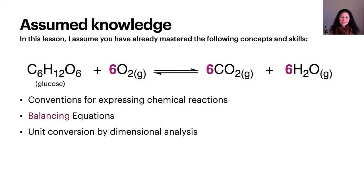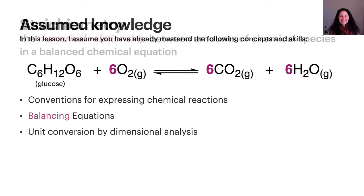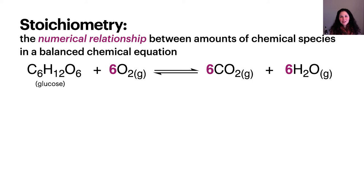Throughout this lesson on stoichiometry, I will assume that you've already mastered these skills. In chemistry, stoichiometry is the numerical relationship between the amounts of chemical species in a balanced chemical equation. In other words, it is the relationship implied by the numerical coefficients that are used to balance the equation. The equation must be balanced correctly in order to determine stoichiometric relationships.